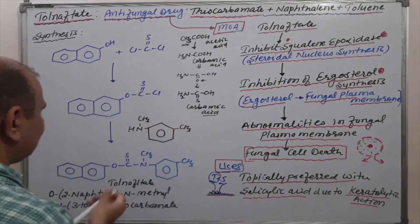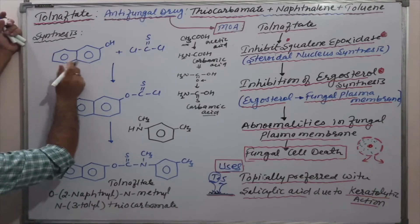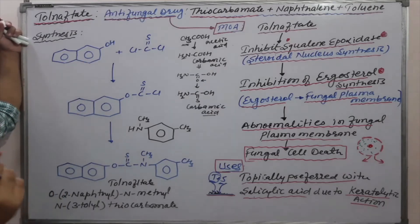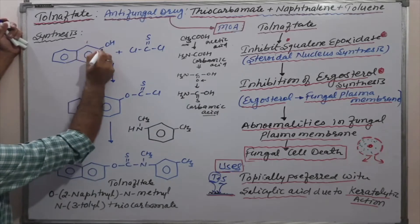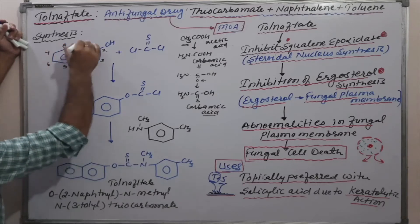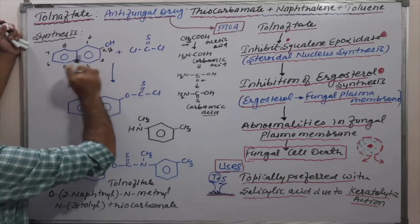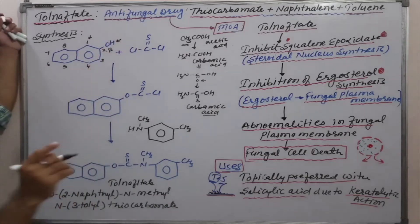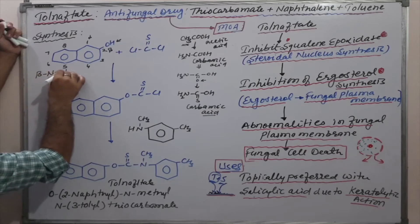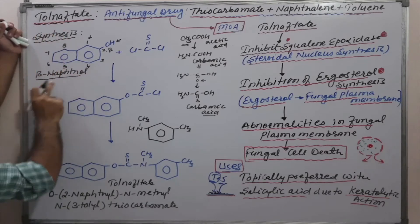Similarly, consider two benzene rings fused together — that is naphthalene. Naphthalene is numbered 1 through 8. We can identify alpha and beta positions. The beta position (position 2) has an OH group, meaning that structure is known as beta-naphthol. Beta-naphthol is the starting material for tolnaftate synthesis.